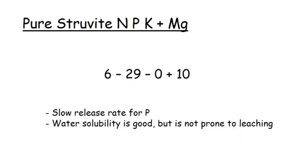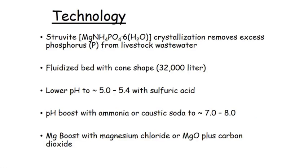Struvite itself is an NPK-plus-magnesium fertilizer, formula 6-29-0-plus, and it tends to be a slower to medium release rate for phosphorus. Water solubility is reasonable but it's not prone to leaching, so it has advantages environmentally. The technology produces struvite — this magnesium ammonium phosphate compound crystal — in a fluidized bed with a cone shape.